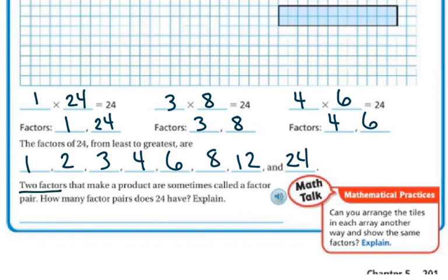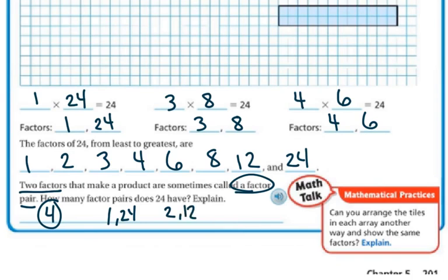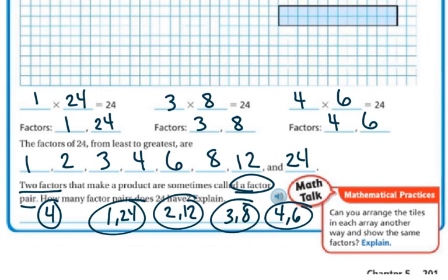Two factors that make a product are sometimes called a factor pair. How many factor pairs does 24 have? The factor pairs are actually 4: 1 and 24, 2 and 12, 3 and 8, and 4 and 6 — so it has 4 factor pairs. Because 1 times 24, 2 times 12, 3 times 8, and 4 times 6 all equal 24. Those are all my factor pairs.